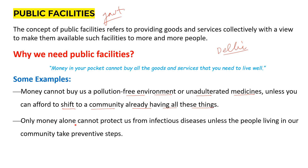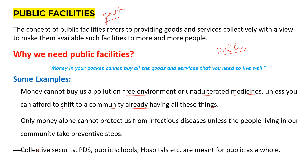Money alone cannot protect us from infectious disease unless the people living in our community take preventive steps. Next is collective security. Examples of public facilities include collective security, public distribution system, public schools, and hospitals — all meant for the public as a whole. If individual efforts were made for security, every one of 10 houses would need guards. But a police station serves the public under its jurisdiction — that is collective security. So public facilities are meant not for individuals but for more and more people.